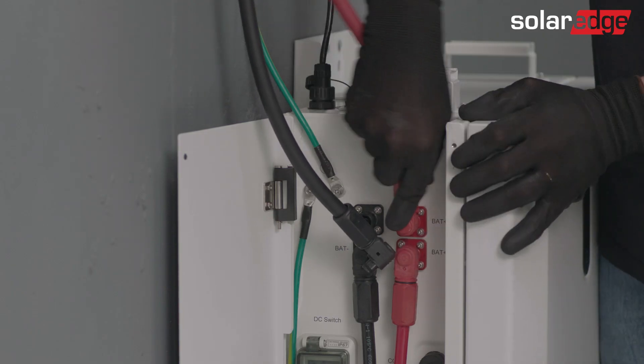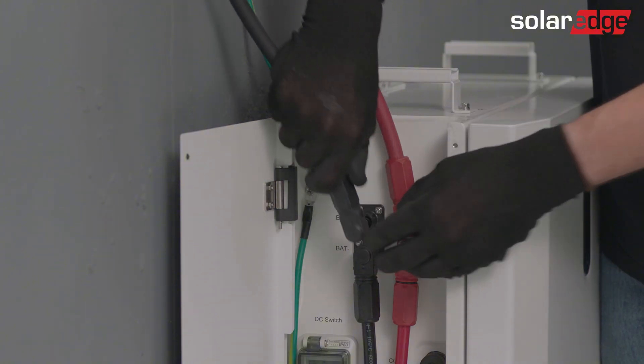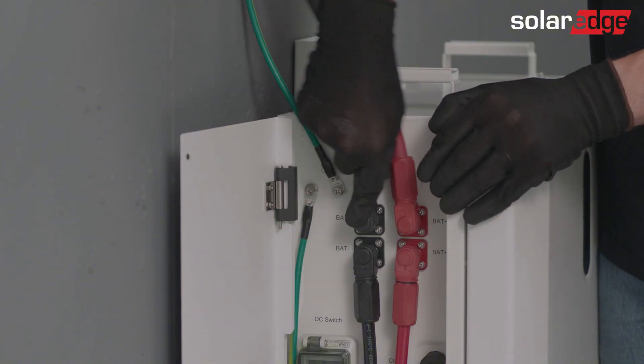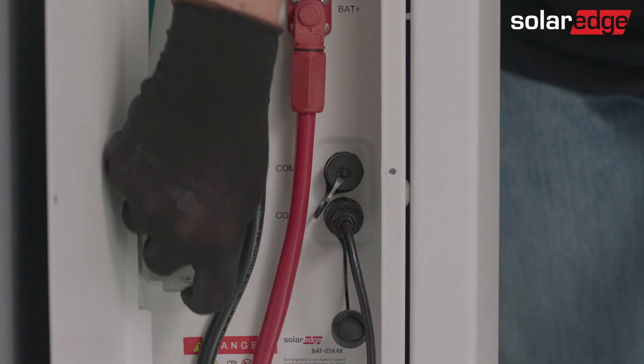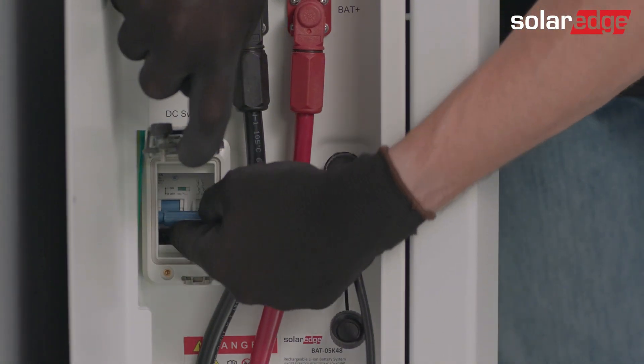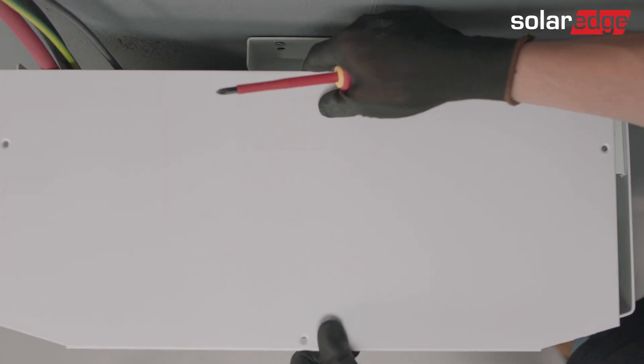Lastly, connect the red and black DC cables from the top battery in the tower to the inverter. Pay attention to the polarity at the inverter side. Now, after finished wiring, turn on the circuit breakers and close the left covers in all batteries.